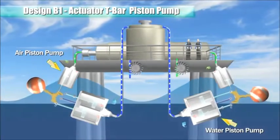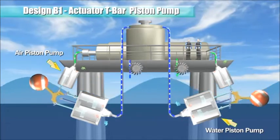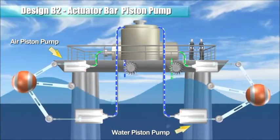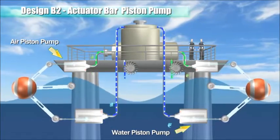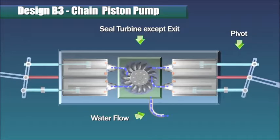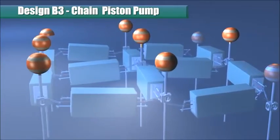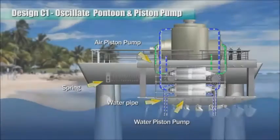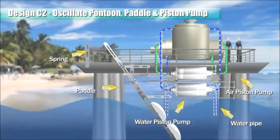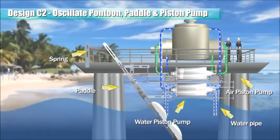A T-shaped actuator bar is pivoted to the body of the pump such that when the float is pushed up and down by wave forces, the actuator bar oscillates about a pivot and in turn reciprocates the pistons. This actuator bar pump system uses a single piston pump and a float pivoted to rise and fall with wave forces. Each pump body is configured to include two actuator T-bar piston pumps arranged end-to-end with a sealed turbine disposed in between. The pistons of the two pumps are interconnected and linked to a floating pontoon.